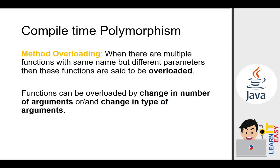Method overloading: when there are multiple functions with the same name but different parameters, these functions are said to be overloaded. Functions can be overloaded by a change in the number of arguments or a change in the type of arguments. We've discussed and done many examples of this already, so we'll move on.